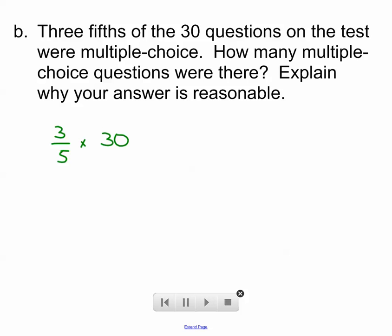So it's very similar to the last one. Now we're going to multiply 3 fifths times 30, and we'll find out what fractional part is multiple choice questions. So 5 goes into 30 six times. And then we'll go 3 times 6 is 18. In other words, 18 multiple choice questions.